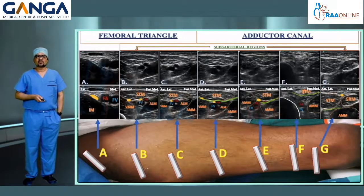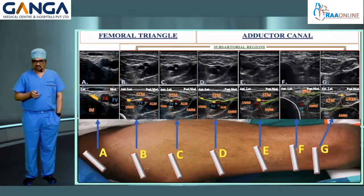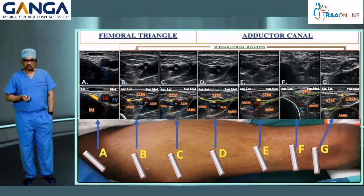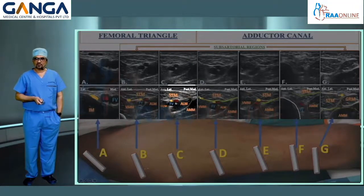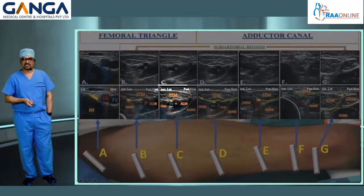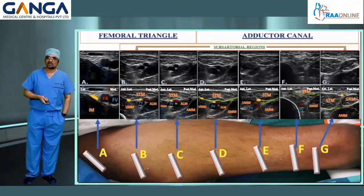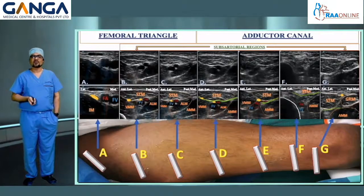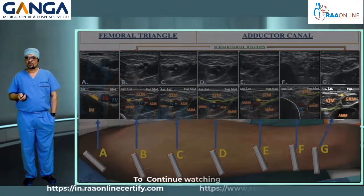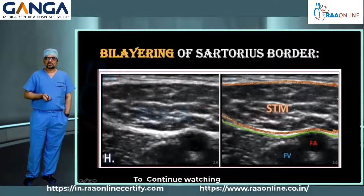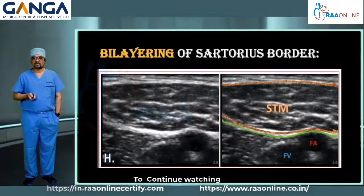It is also very important to know the sonoanatomy at various levels of the thigh. You need to demarcate the femoral triangle and adductor canal by identifying the apex of the femoral triangle. In the figure, point C demonstrates the apex, where the medial border of sartorius and medial border of adductor longus overlie one another, forming a sign called the kissing sign. The area above C is the femoral triangle and below C is the adductor canal. The vaso-adductor membrane, demarcated by the green line, is a peculiarity of the adductor canal, causing the lower border of sartorius to appear bilayer in this region.